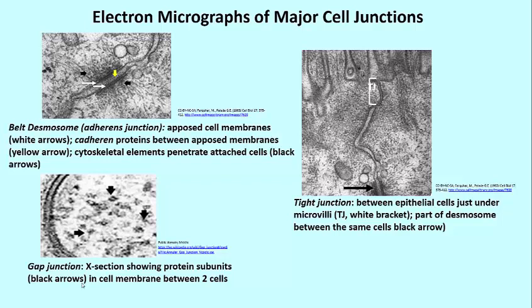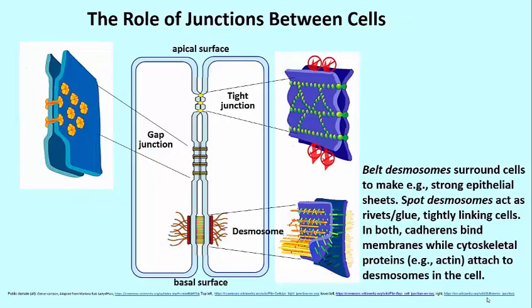Belt desmosomes are the so-called adherence junctions, whereas desmosomes are thought of more like spot rivets. Desmosomes of both sorts are the glue that holds cells together in a tissue. You can see that desmosomes are created when two cells come close to one another and attach to one another by their cadherins.